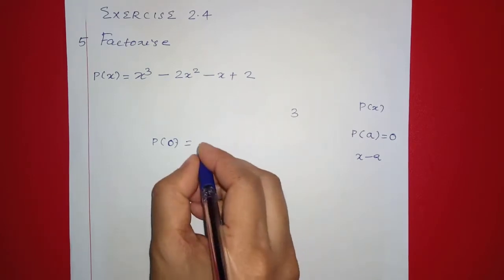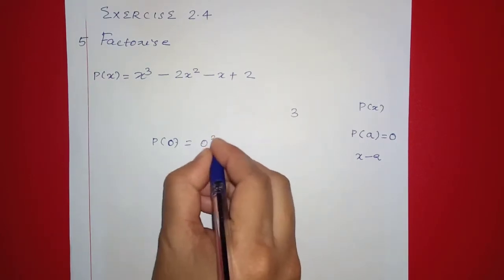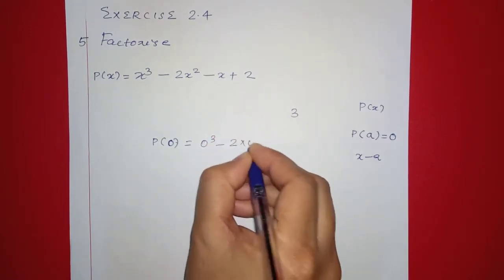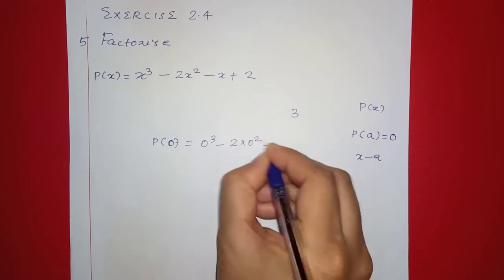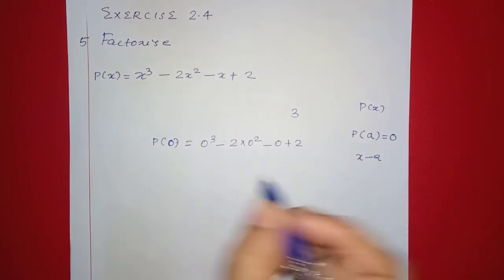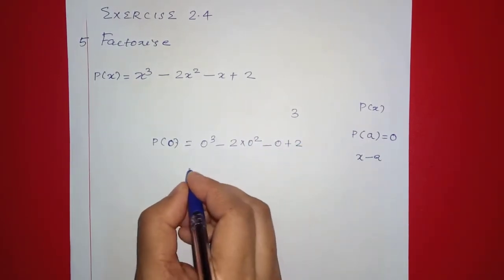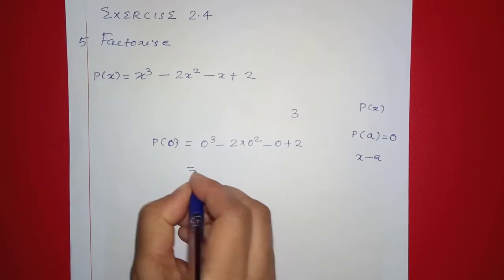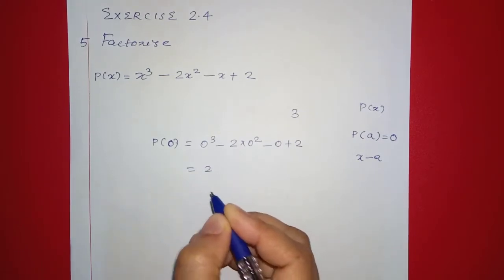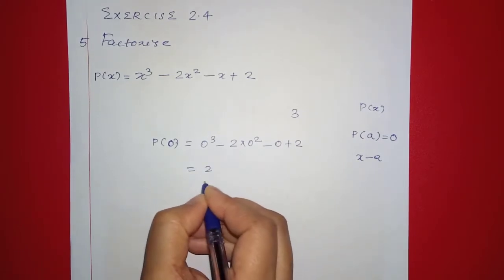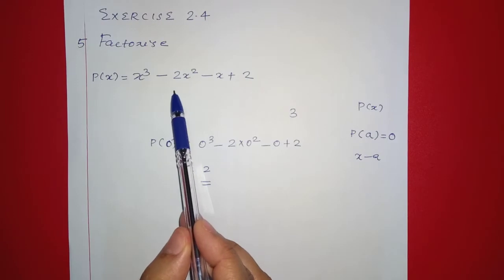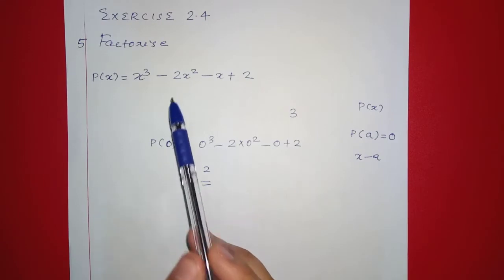Substituting x equals 0: 0 raised to 3, minus 2 times 0 squared, minus 0, plus 2. If you multiply the terms with 0, you get 2. So P of 0 is equal to 2, which is not equal to 0.